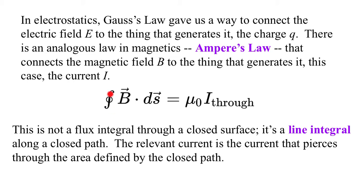Ampere's law is the line integral of B dot dS equals mu naught times the current through the line integral. This is not a flux integral through a closed surface; it's a line integral around a closed path. The relevant current is the current that pierces through the area defined by the closed path.